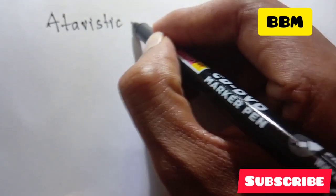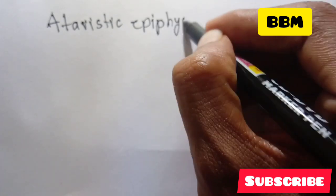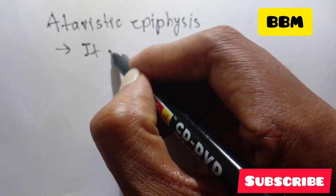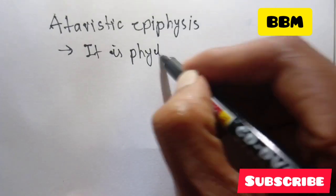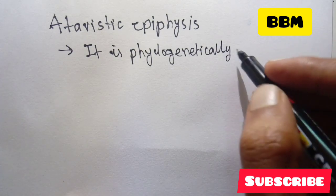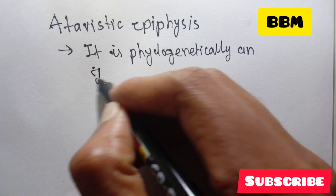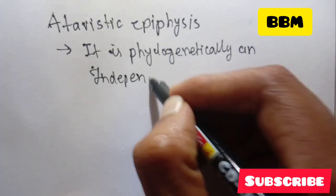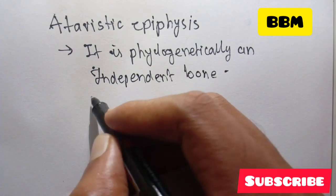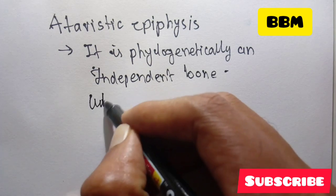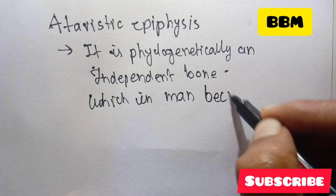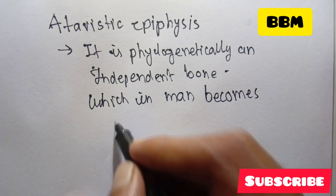The next type is Atavistic Epiphysis. Phylogenetically, it is an independent bone which in man fuses to another bone.